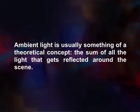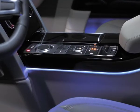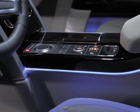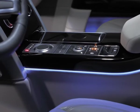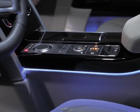Ambient light is usually something of a theoretical concept — the sum of all the light that gets reflected around the scene. For example, there is always some light in the shadows even on the clearest day, due to reflection from surrounding objects. Ambient light causes no shadows; instead, it fills them in.